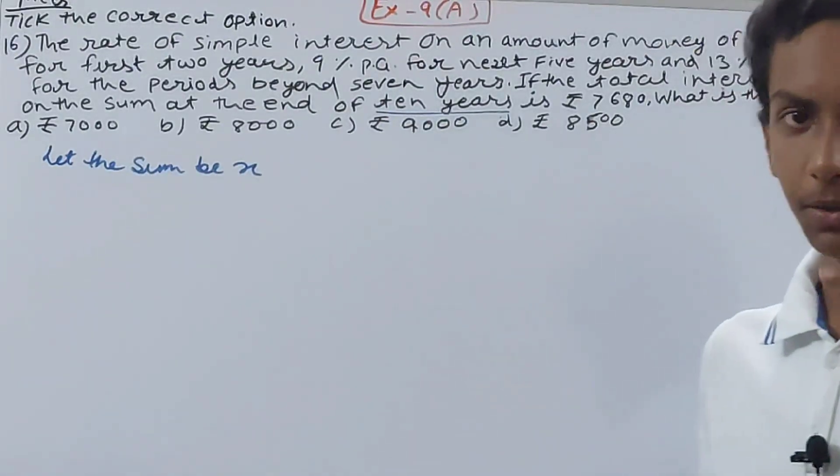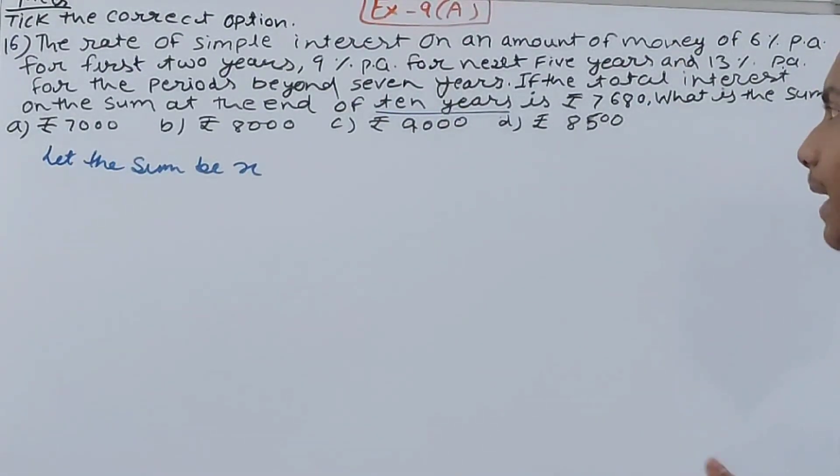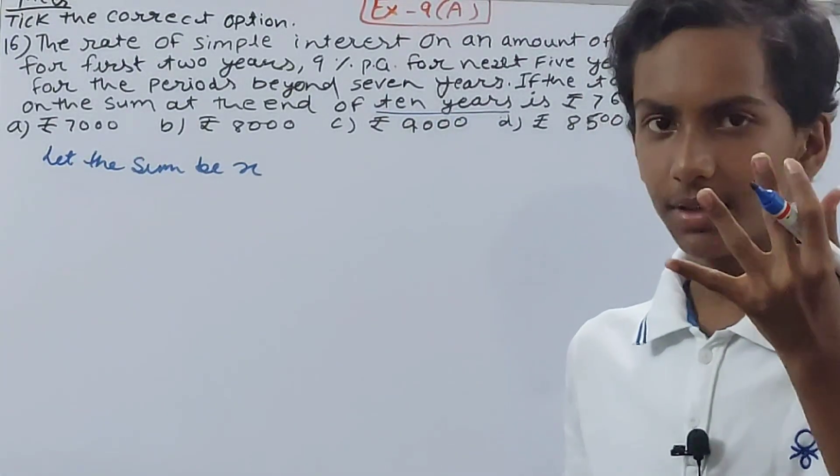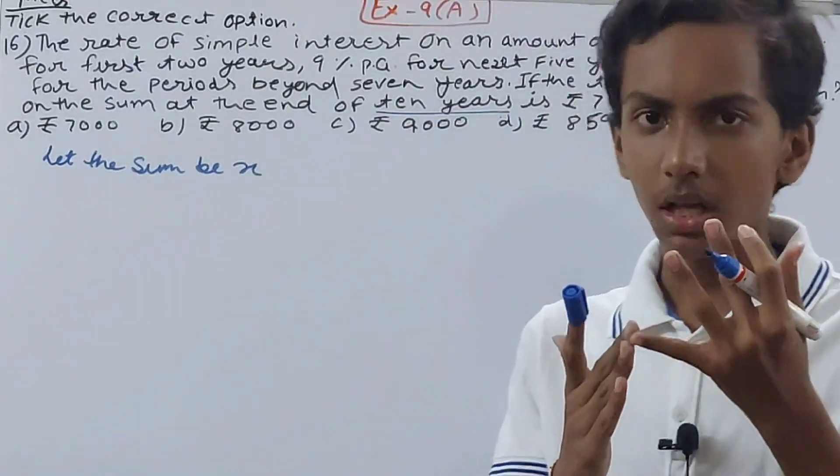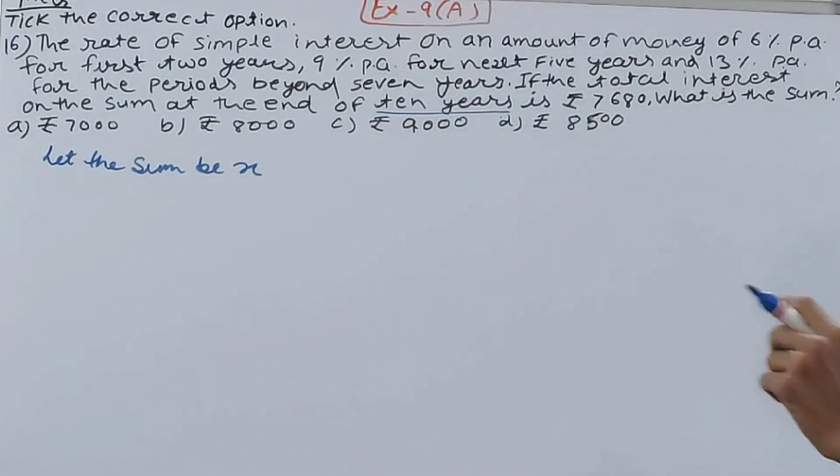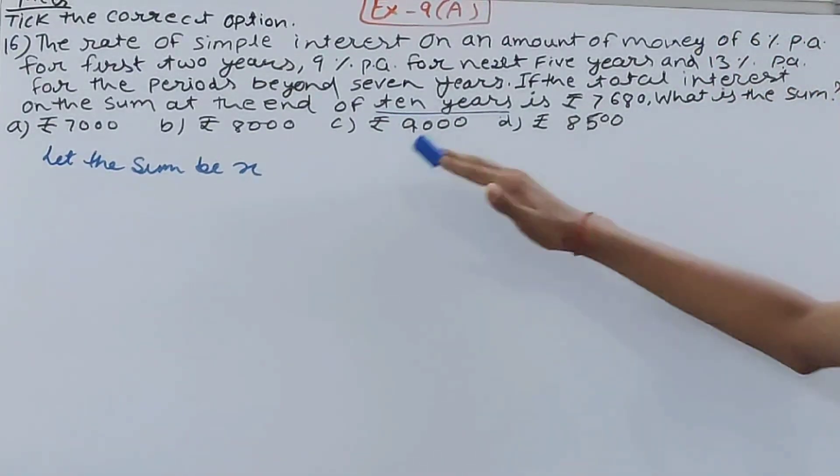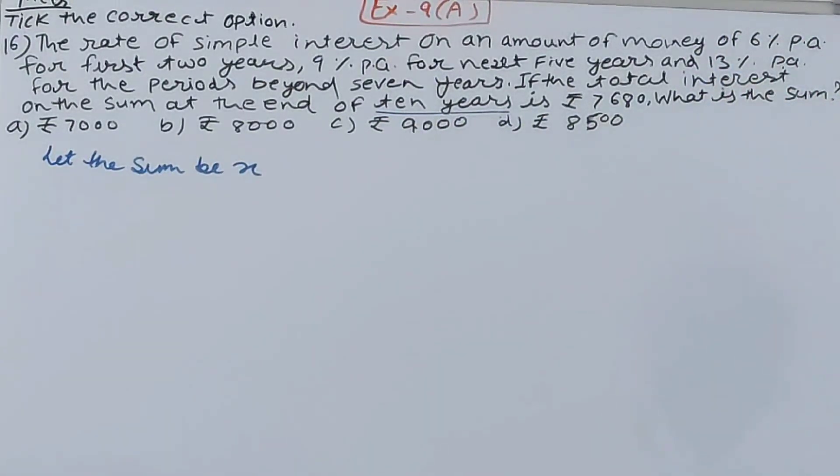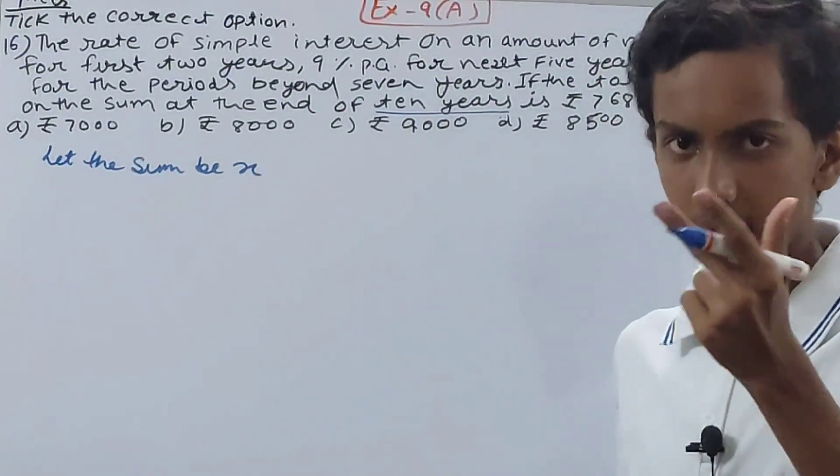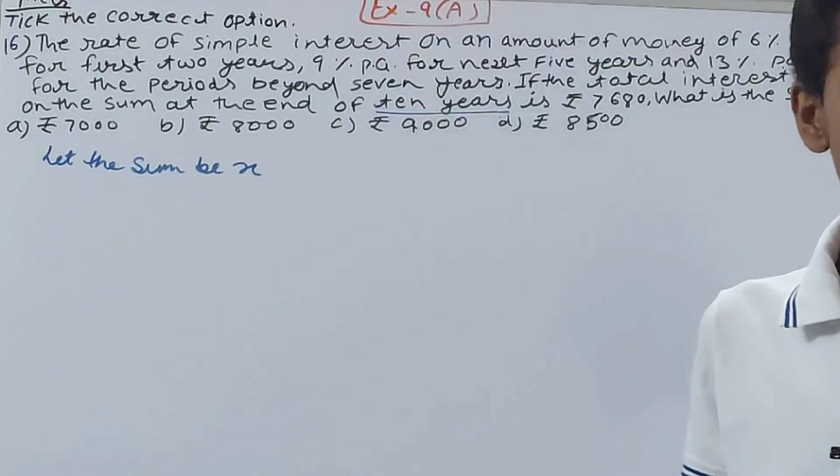See what it says: 6% per annum is the rate for the first two years, years one and two. Then 9% per annum for the next five years, so that means years three, four, five, six, seven. Till seven years, it's 9% per annum, leaving the first two years of course. Then for the periods beyond seven years, it is 13% per annum. So year eight, nine, and ten, that is going to be 13% rate.